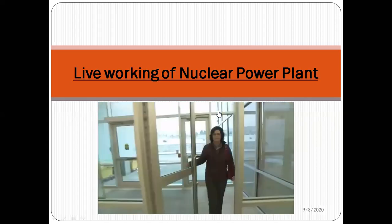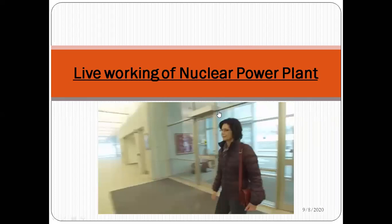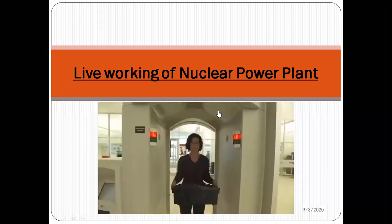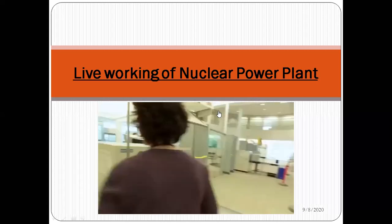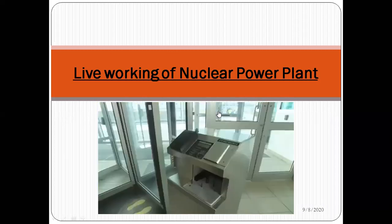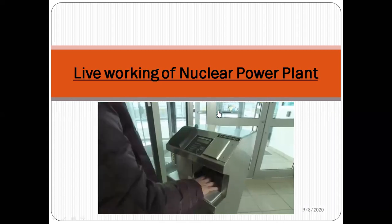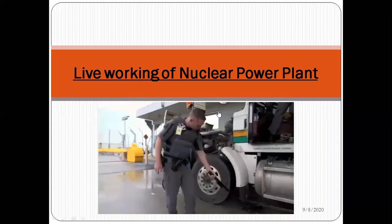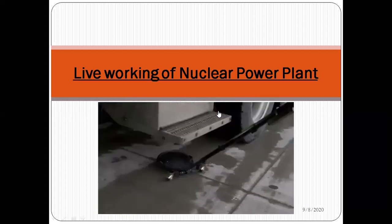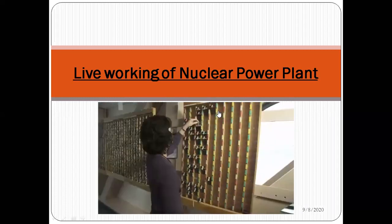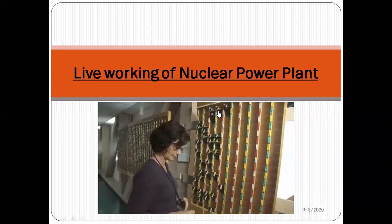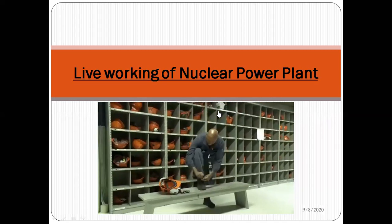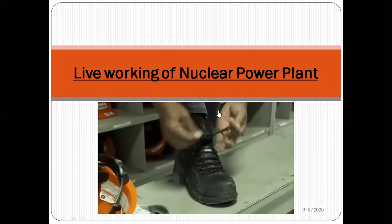Before going into the station, everyone must pass through a security building that operates like an airport security system - machines to check for explosive chemicals, X-ray machines, and detectors. Everyone must pass through a turnstile where their security card and individual hand profile must match. All times, highly trained security staff inspect every person and everything entering and leaving the station. All personnel are issued devices to constantly monitor for radiation while inside the station.